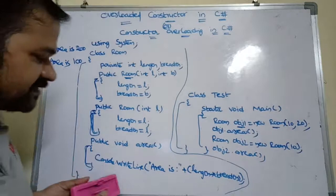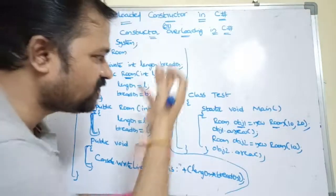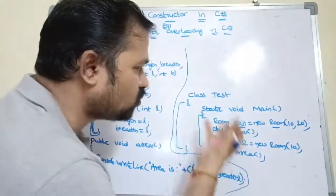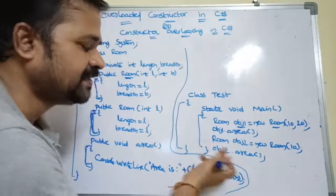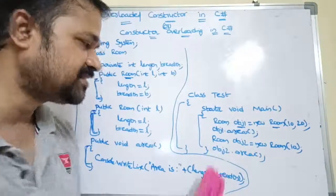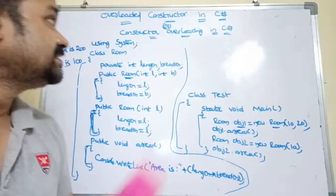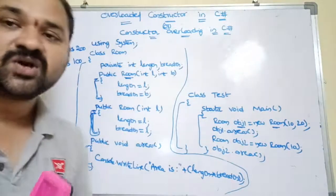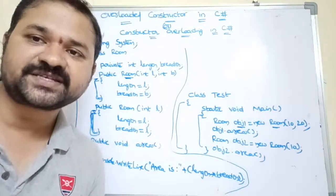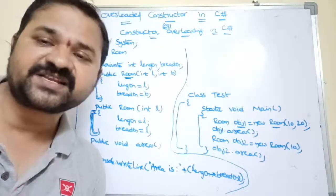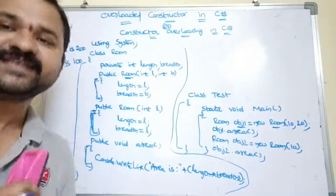This method execution is over and control returns to the main method. There are no more statements after this. This is about overloaded constructors, or constructor overloading, in C#.